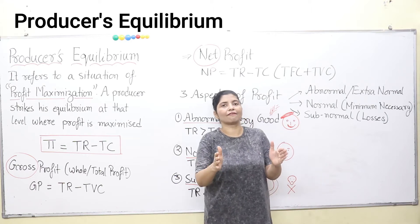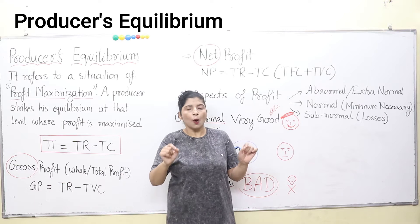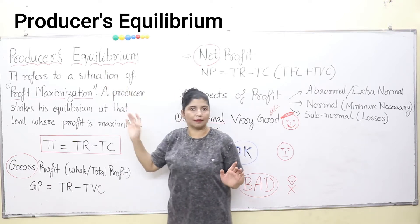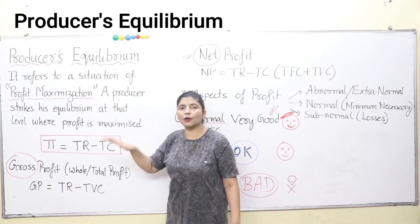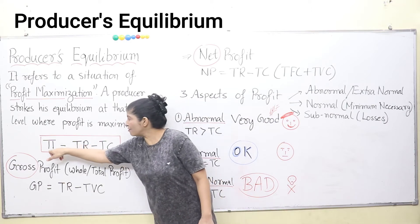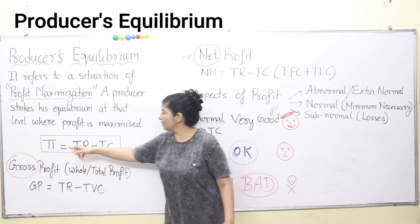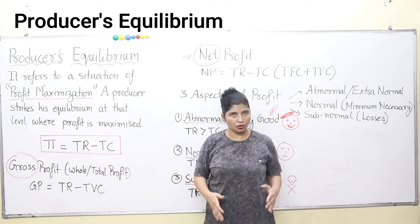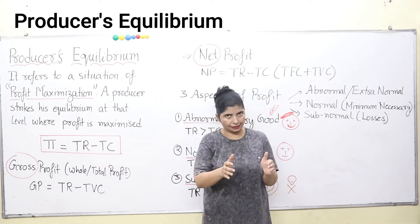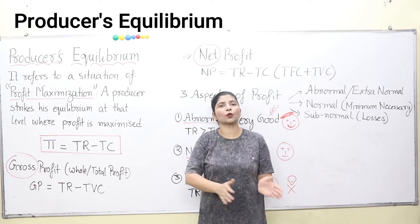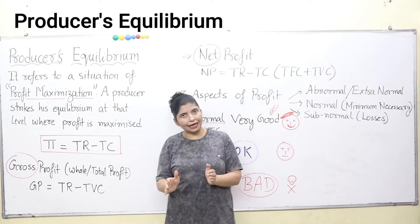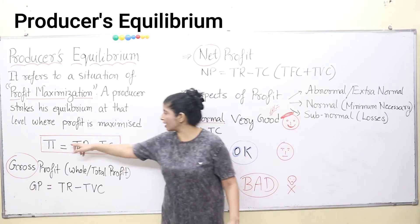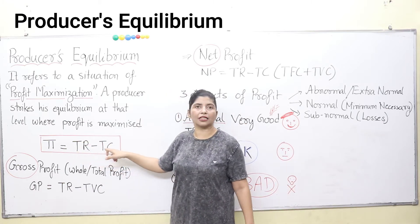That is the condition of his equilibrium. Profit maximization means producer's equilibrium. What's the equation here? Profit, or pi, is the symbol being used. Profit is equal to total revenue minus total cost. So whatever he earns, he subtracts the total cost from that earning, and the balance is his profit.